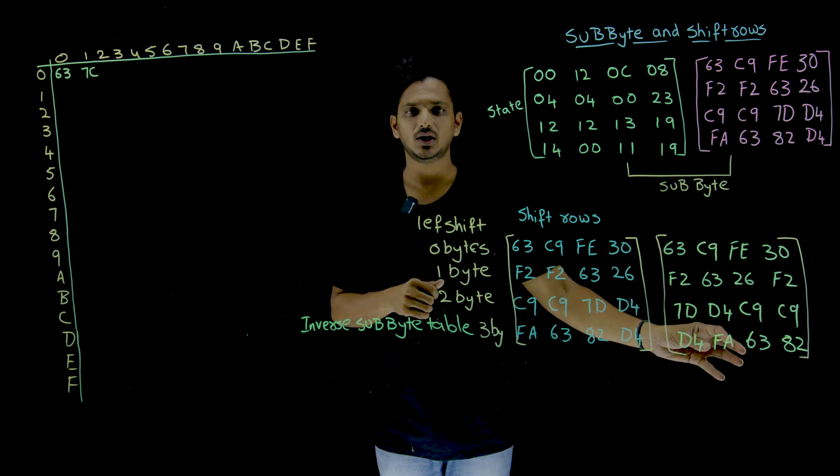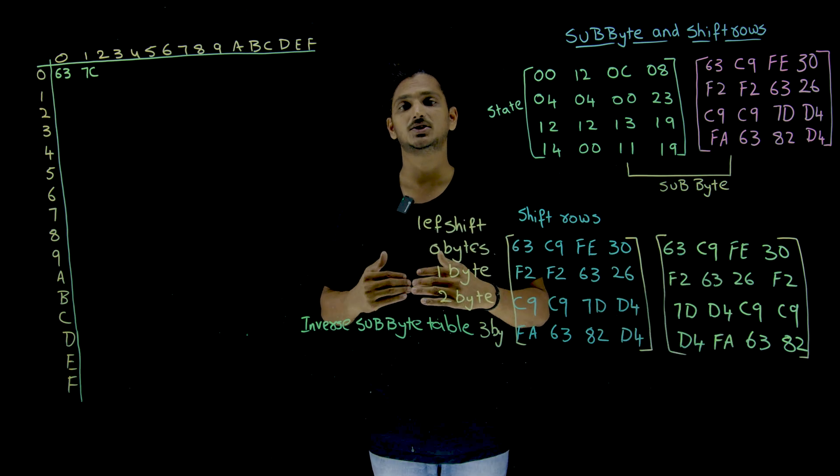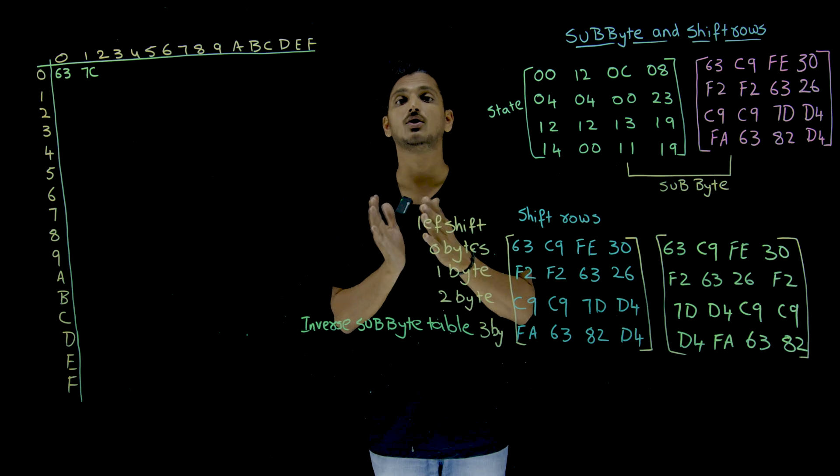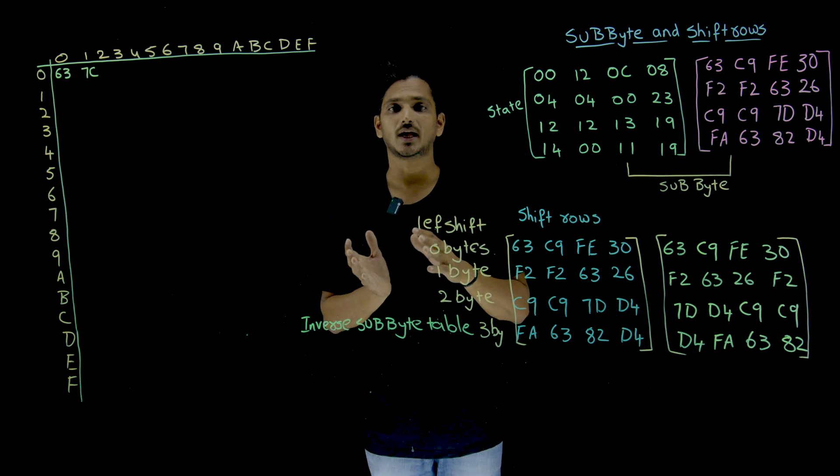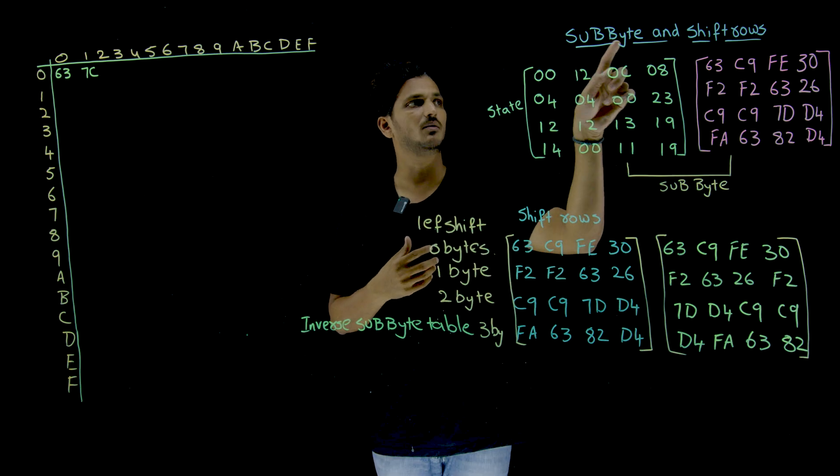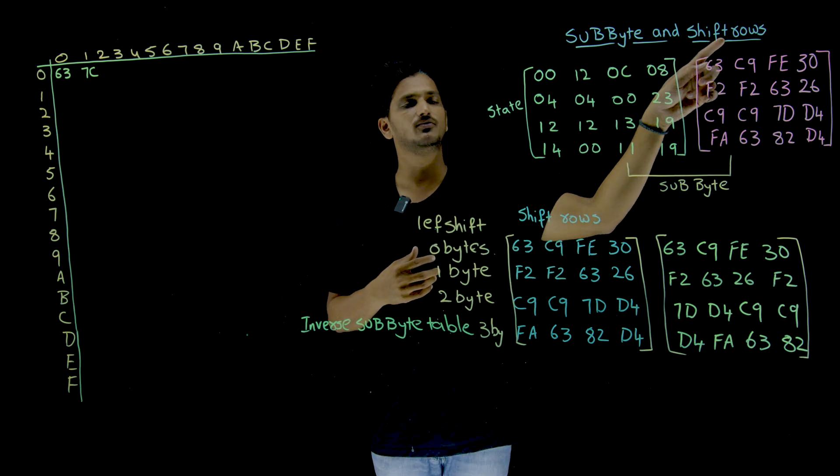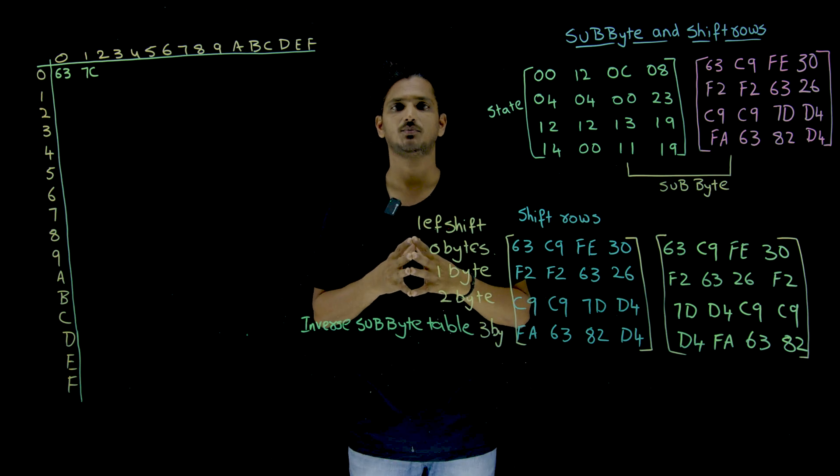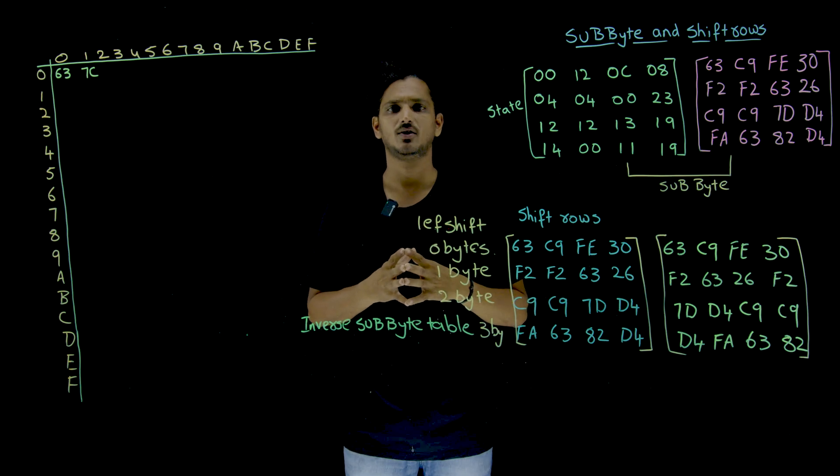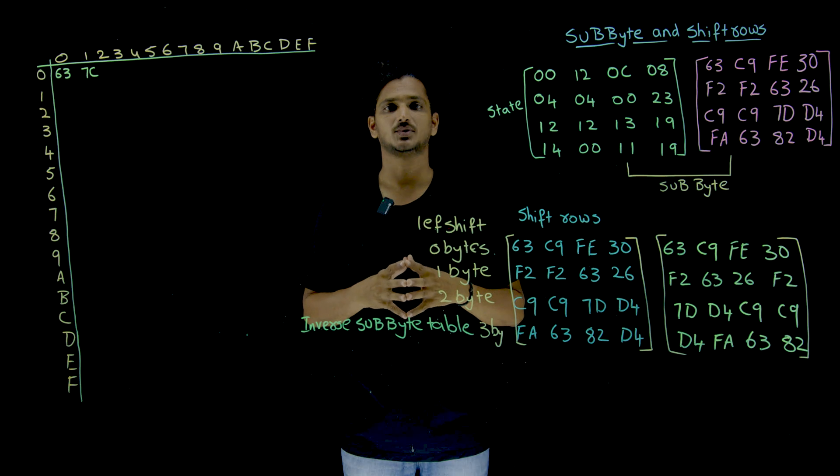The output which we got from here will be sent to the next stage. What is the third stage? Mixed columns. So that will be discussed in our next class. Hope you understand what happens inside the substitution byte and shift rows in AES. If you have any questions regarding the concept, please post your questions in the comment section below. Thanks for watching. If you have not subscribed to our channel, please subscribe to our channel and press bell icon for the latest updates. Thank you.